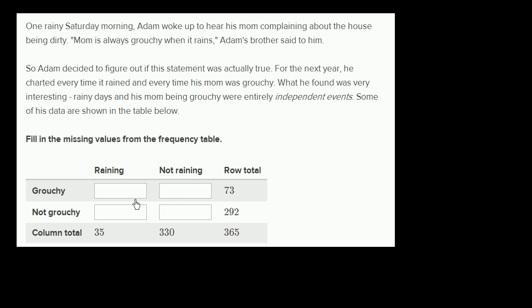So the first thing we said, well, how do we figure this out? We have these four boxes here. It's not clear that we have enough information to fill it out just with this table. But we have to remember what they told us. They told us that his mom being grouchy and it raining were entirely independent events. Another way of saying that is independent events.